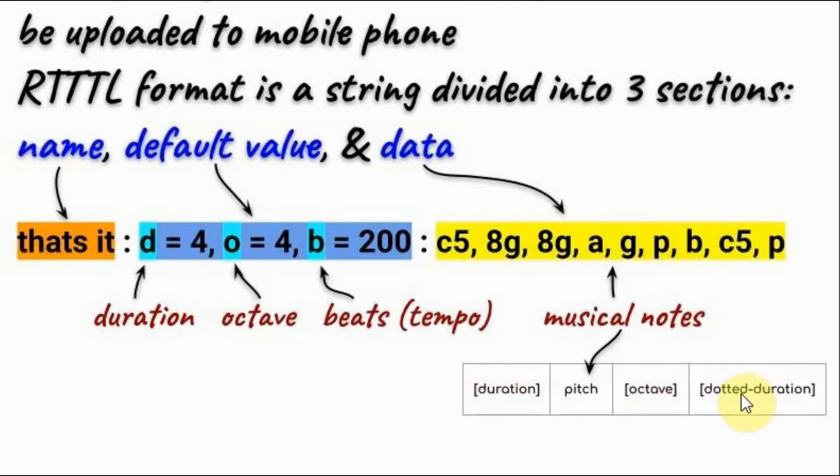The values between square brackets are optional, but the pitch must always be mentioned. If the duration or the octave are not indicated with the pitch, then we use the default values.